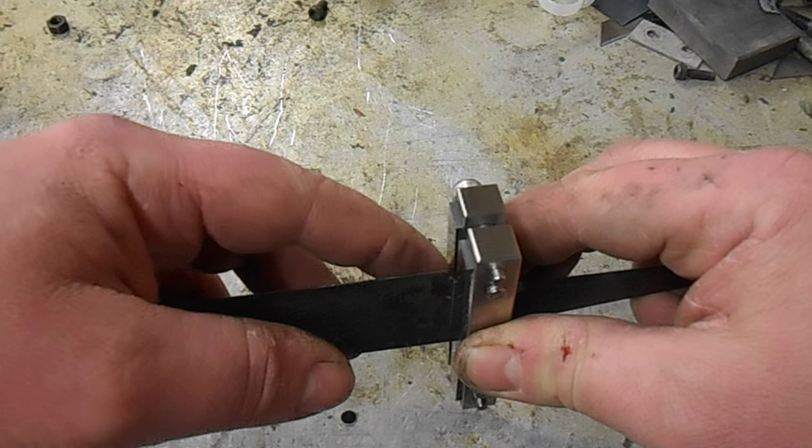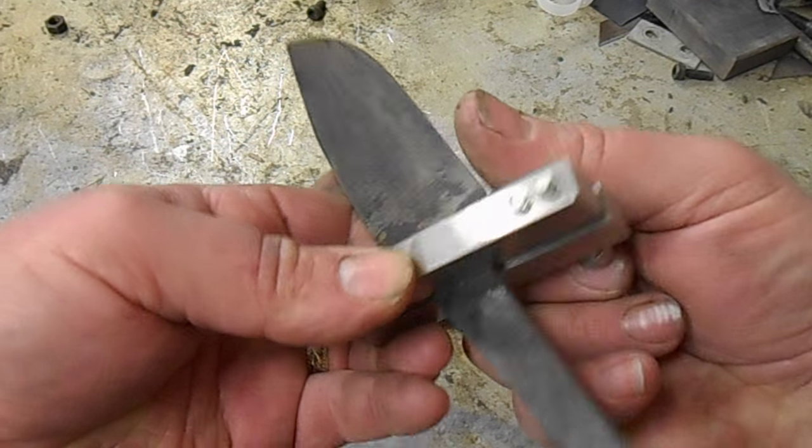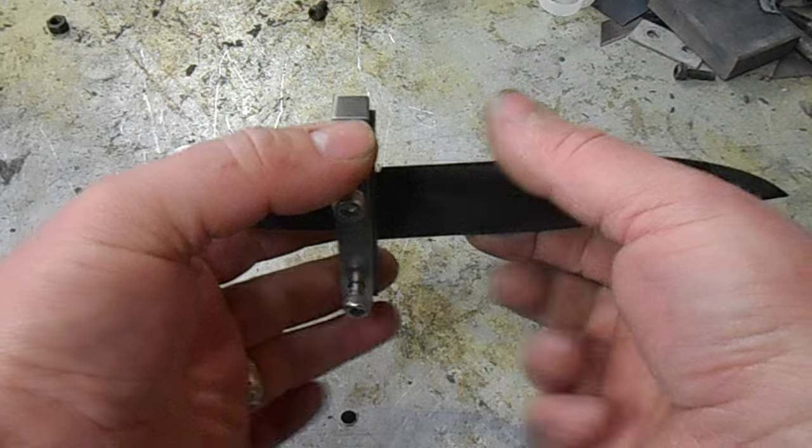Once that's clamped there, you can grind to the file guide with the belt resting, rubbing on the carbide, and then repeat on the other side. And your plunge lines will be identical.